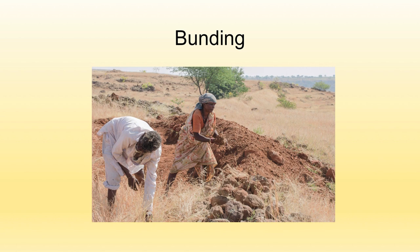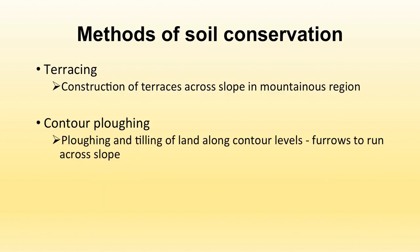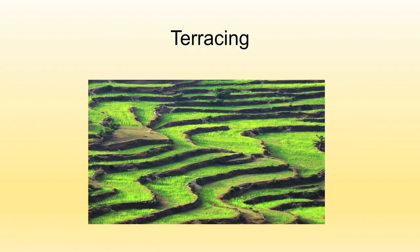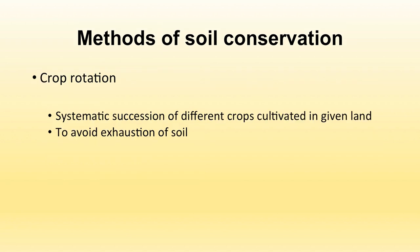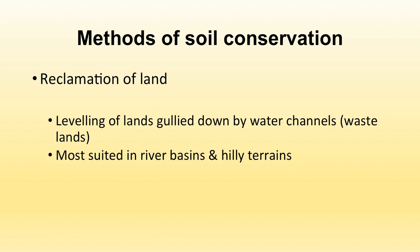Further methods of soil conservation include terracing — forming terraces to control soil erosion, commonly seen in mountainous areas; contour ploughing; adoption of strip farming, where one strip is farmed and another is left fallow alternately; crop rotation — growing different crops in different seasons in the same area; and reclamation of land — leveling land for agricultural purposes to reduce soil erosion.